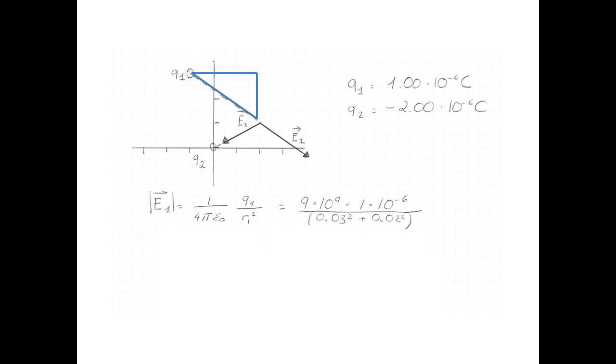Next we calculate the magnitude of the electric field. So for E1, 1 over 4 pi epsilon 0, Q1 over R1 squared. Plug in the numbers, 9 times 10 to the 9, multiplied by the 1 microcoulomb, and divided by 0.03 squared plus 0.02 squared. So remember that that's the hypotenuse of the triangle that you see in blue on the picture, the total distance between Q1 and the point P3. That's 6.92 times 10 to the 6 newtons per coulomb.